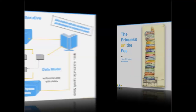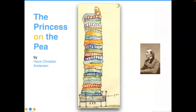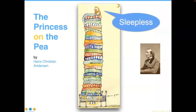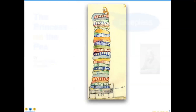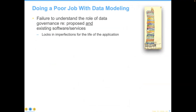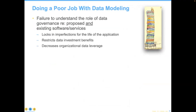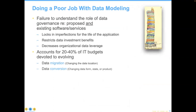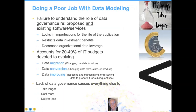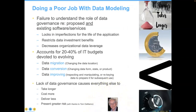This is to avoid what we see too much in the industry: the situation of the princess on the pea. There's the princess at the top who is sleepless as a result of having an imperfection. A serious defect in a product can haunt it through the entirety of its life. If you start out with a flawed data model, it locks in these imperfections for the life of the product. It restricts data investment benefits in the future, decreases the organization's ability to leverage data, and consumes 20 to 40% of all IT budgets in migrating, converting, and improving. Lack of proper modeling takes longer, costs more, and delivers less.